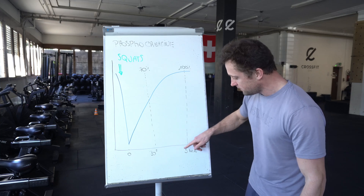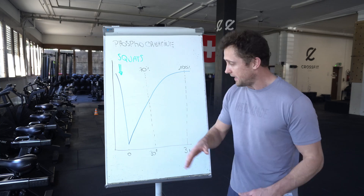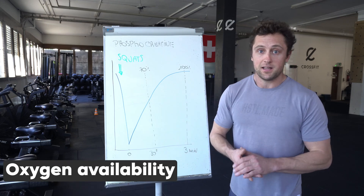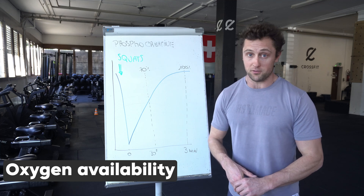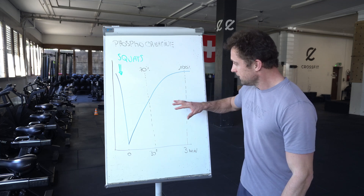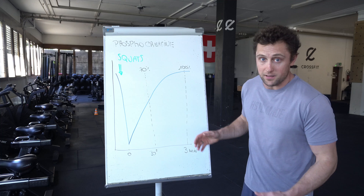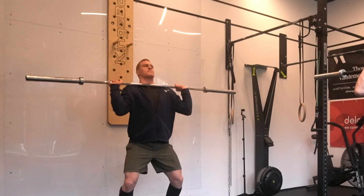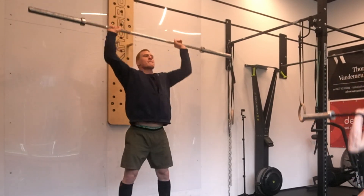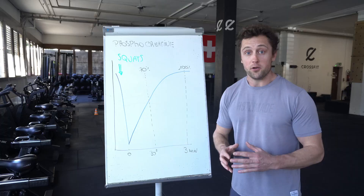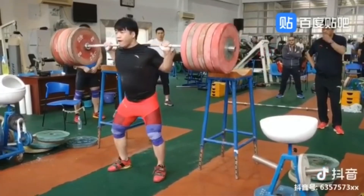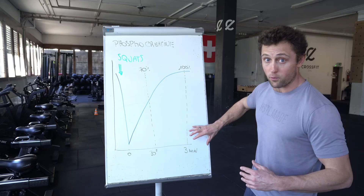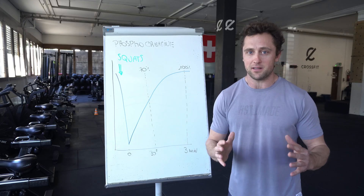It takes up to three minutes to fully recover phosphocreatine, and this is importantly dependent on oxygen availability — how much oxygen can actually be delivered to the muscle. This is different for everyone. Better CrossFit athletes, for example, may need only one to two minutes to fully recover, while weightlifters with a lot of type 2 or fast-twitch muscle fibers may need three, four, or even five minutes — that's why they take so much rest between their sets.